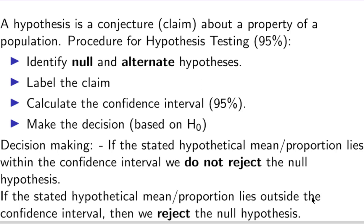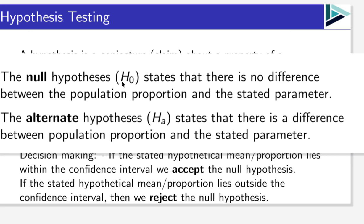If the stated hypothetical mean or proportion — i.e., the null hypothesis — lies outside the confidence interval, then we reject the null hypothesis. Similar to confidence intervals, hypothesis testing can be done on means and also on proportions. The null hypothesis H0 states that there is no difference between the population proportion and a stated parameter, so the null hypothesis will always contain an equals sign.